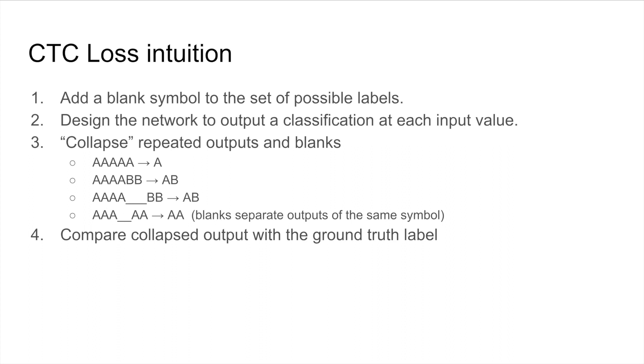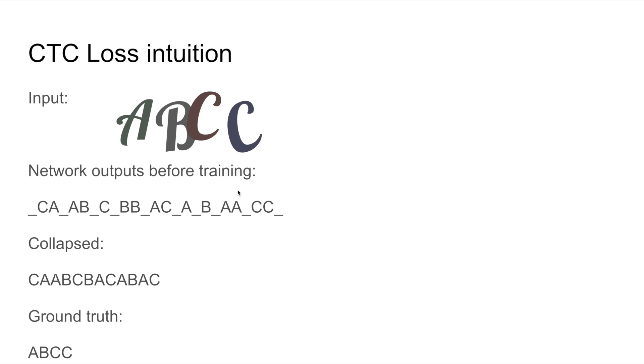And you can see here in the last example that the blank is used such that we can have ground truth labelings with repeated labels. That's the use case for the blank here. And at the end of the day, we can compare our collapsed output with the ground truth label. And I'm going to call these output sequences paths, and it's important to note that for every labeling, there are many paths that can collapse to that labeling, but for a given path, there is only one labeling.